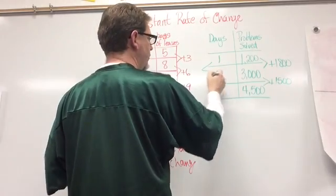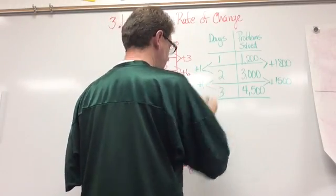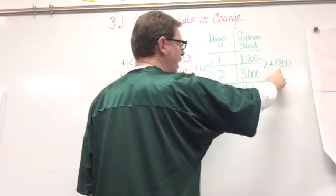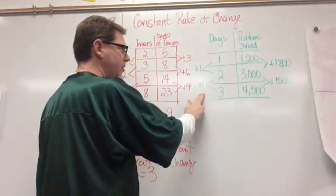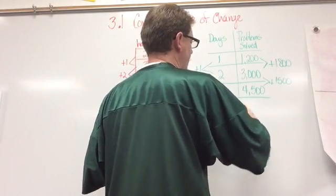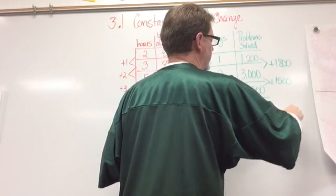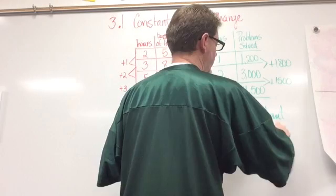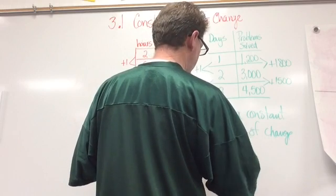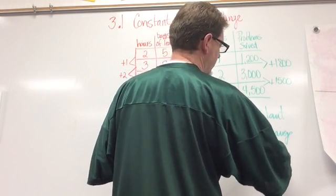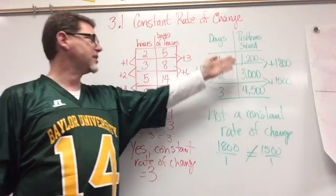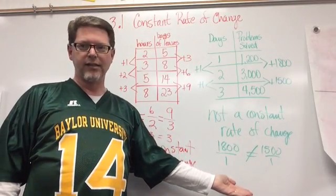Well, let's go over here to our x's. How do I get from 1 to 2? I added 1. How do I get from 2 to 3? I added 1. Well, if these numbers are the same, then for there to be a constant rate of change, the y change has to be the same. My x values are the same, but my y value change are not the same. So this is not a constant rate of change. Because 1,800 over 1 does not equal 1,500 over 1. So here's an example in red of a constant rate of change. And here's an example in green of one that is not a constant rate of change.